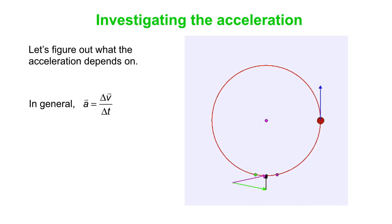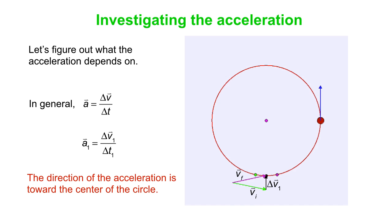So we'll set up this vector construction, where we look at the initial velocity just before it gets to the bottom, the final velocity after it has passed through the bottom, and then delta V is the difference between those two vectors. So what we see here is that delta V points straight up toward the center of the circle when the object is at the bottom, and so the direction of the acceleration is toward the center of the circle. And that's always true for uniform circular motion.